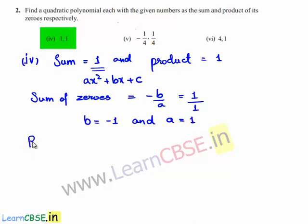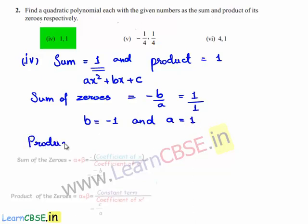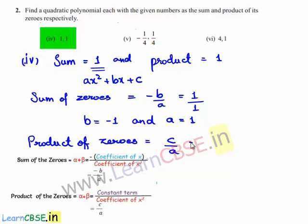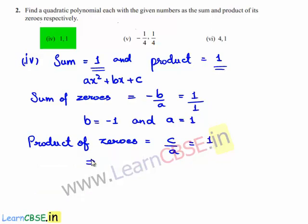We also know that the product of zeros is equal to c/a, and the given product is 1. So c = a by cross multiplication. Since a = 1, c = 1. Finally, a = 1, b = -1, and c = 1.